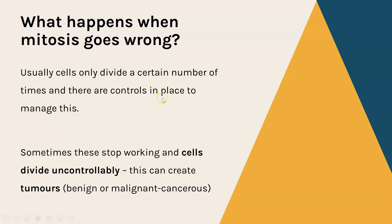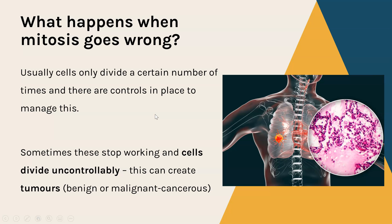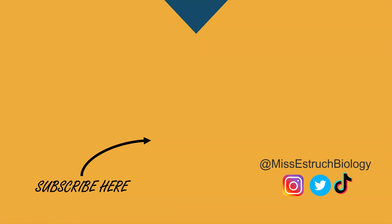That is what a tumor is — a group of cells created by this uncontrollable division. Some tumors are benign, which means they're not cancerous; some are malignant, which means they are cancerous. There's another video on that later in the GCSE topic. So that is it for mitosis — if you found it helpful then make sure you give this video a thumbs up.